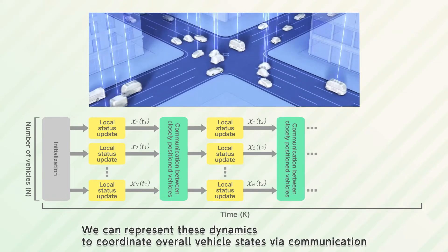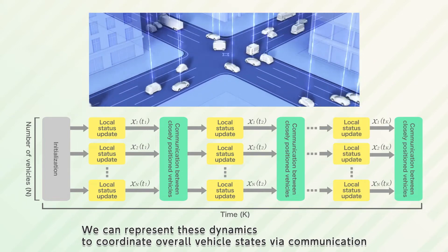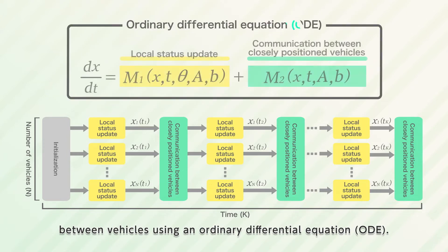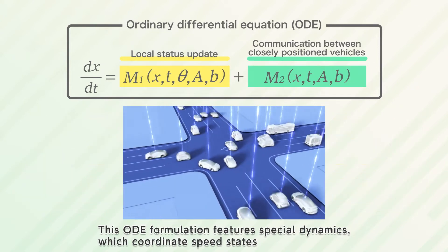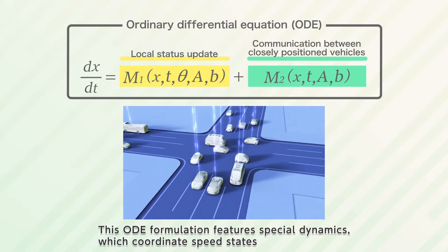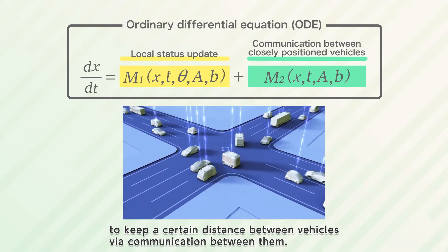We can represent these dynamics to coordinate overall vehicle states via communication between vehicles using an ordinary differential equation. This ODE formulation features special dynamics which coordinate speed states to keep a certain distance between vehicles via communication between them.